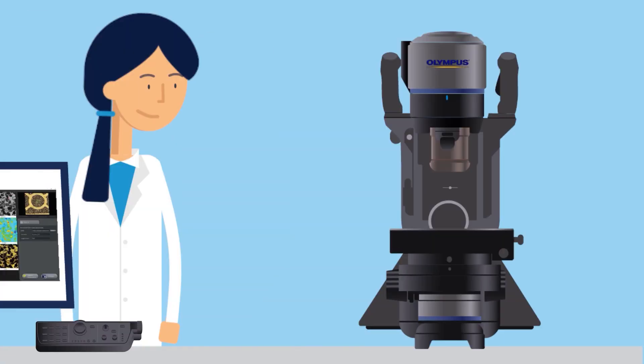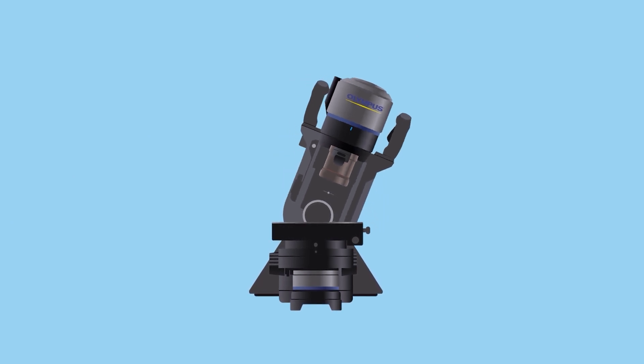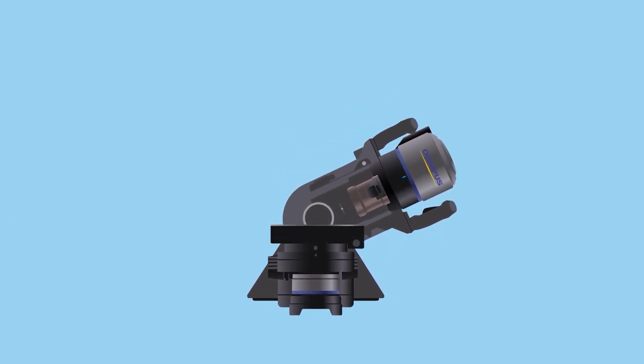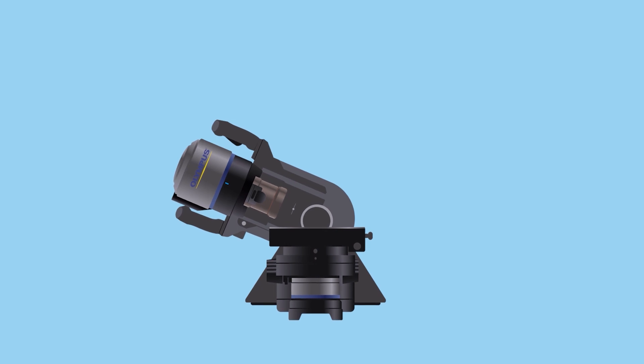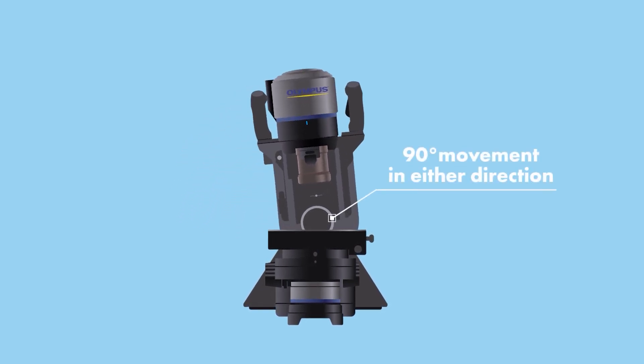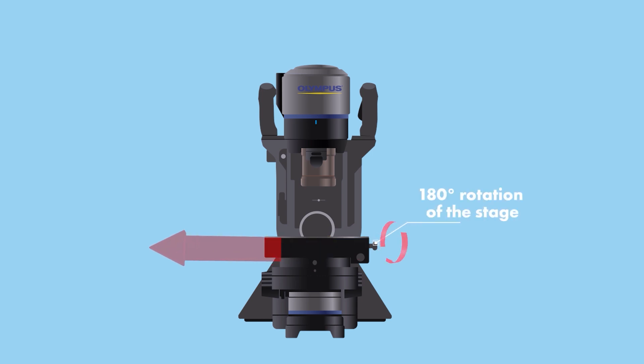With its free angle observation system, Olympus's DSX-1000 Digital Microscope allows you to see your sample in many angles. The rotating observation head enables 90 degree movement in either direction. The stage also rotates 180 degrees so hard to spot defects are easier to find.